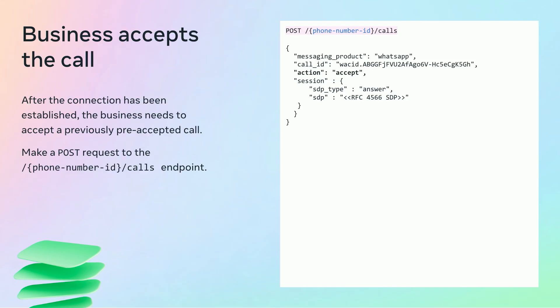Then the business needs to wait for the WebRTC connection to be established. Once the connection has been established, the business needs to accept the previously pre-accepted call. The accept request is almost the same as the pre-accept request — they just need to change the action parameter from pre-accept to accept. After this step, the call is successfully established and it starts.